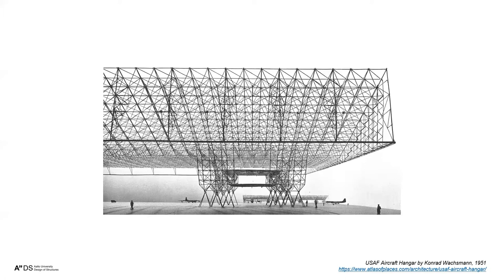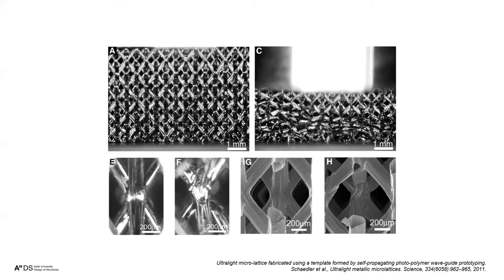This is an example: the USAF aircraft hangar by Conrad Wachsman, already 70 years ago — one of the examples often shown for large space frames in architecture. It turns out lattices are used on many different scales. This is an example of an ultralight micro-lattice. There's a reference to the paper, published in the journal Science. The fabrication method is quite interesting — it involves curing a photopolymer.